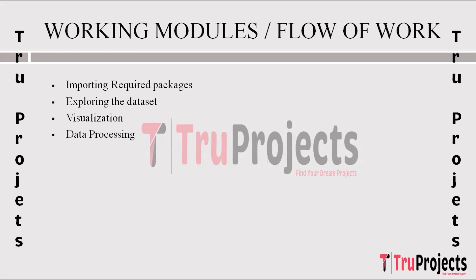Data pre-processing is crucial for refining the text data. This involves removing URLs and other unwanted characters, punctuations, and stop words, and normalizing the data through techniques like lemmatization and stemming. These steps clean and standardize the text for further analysis.